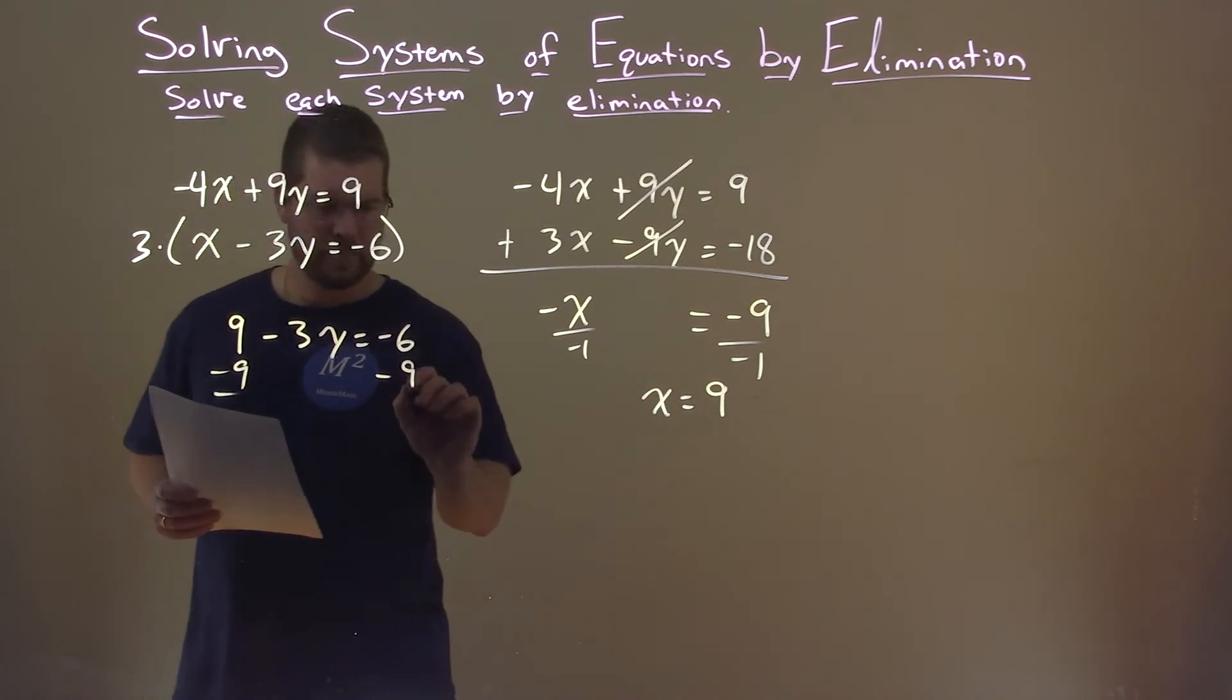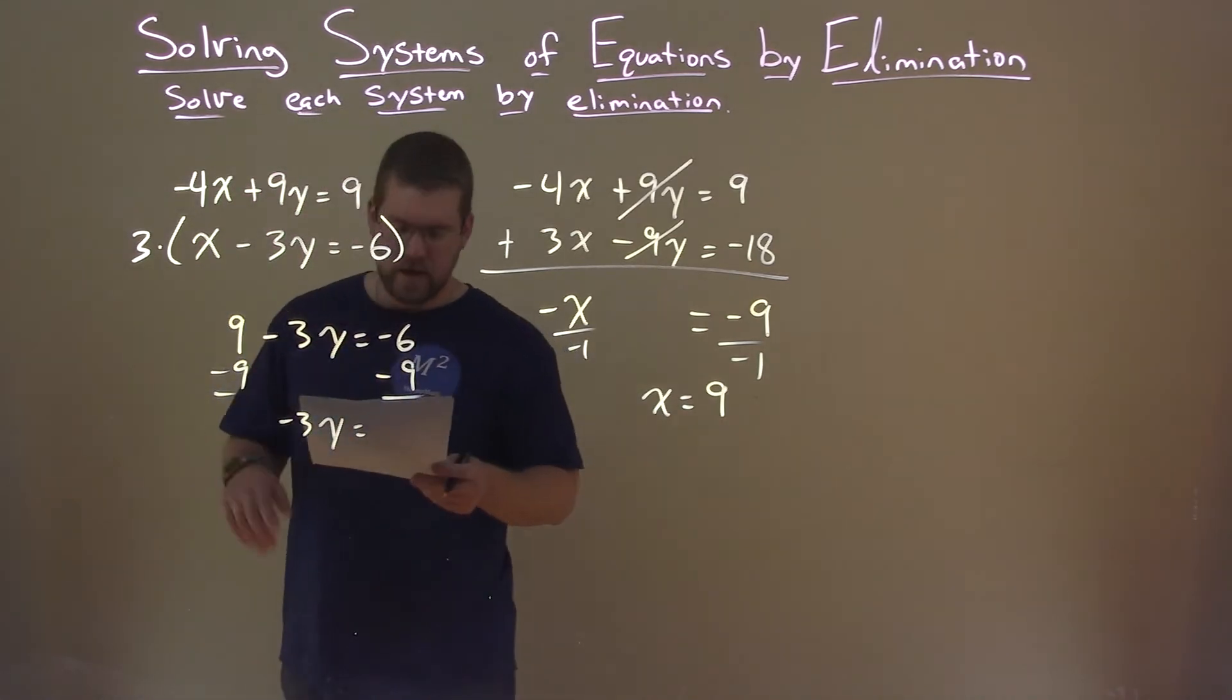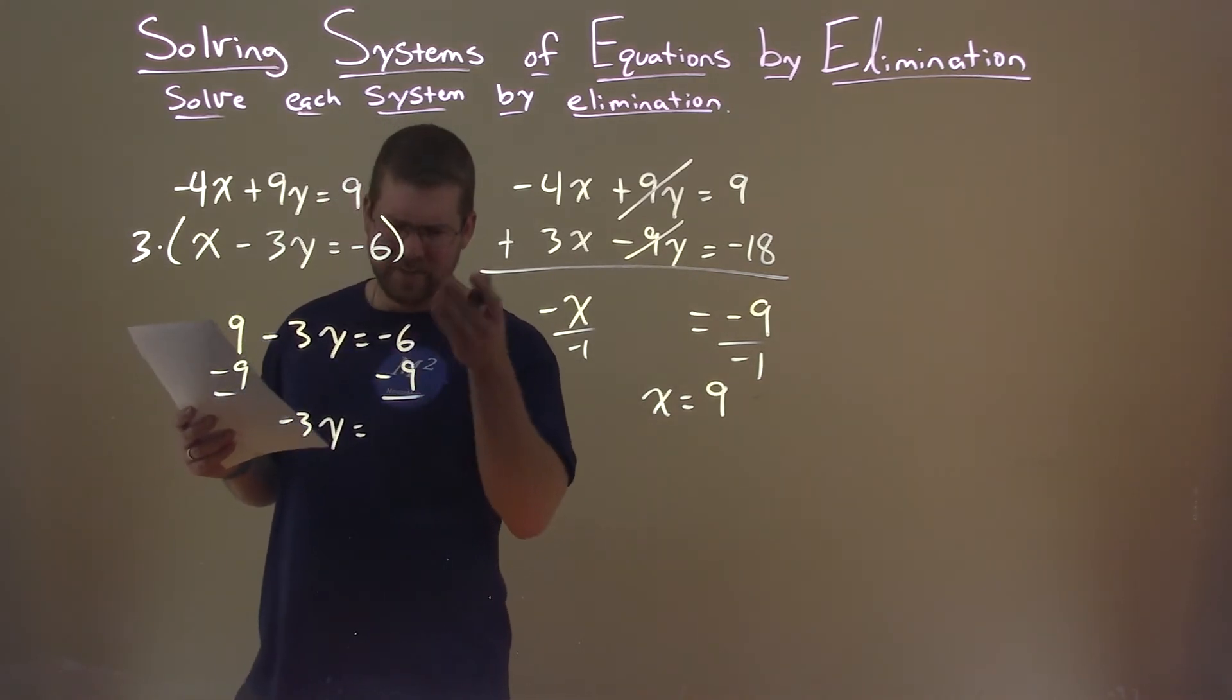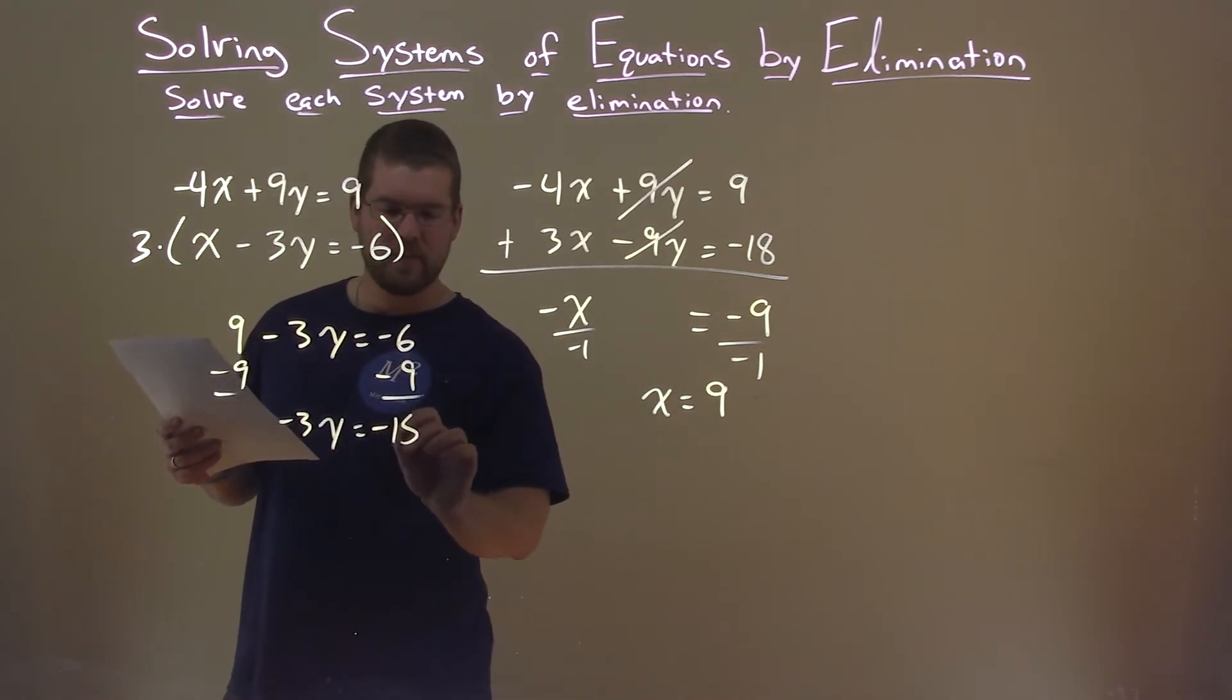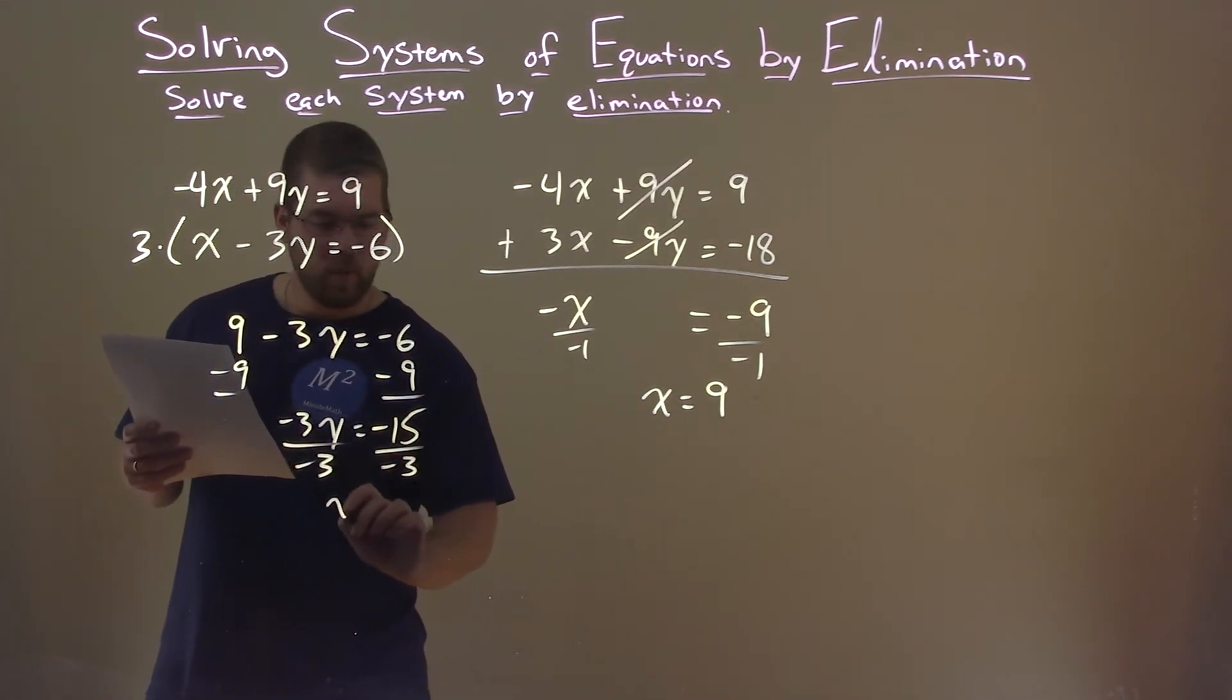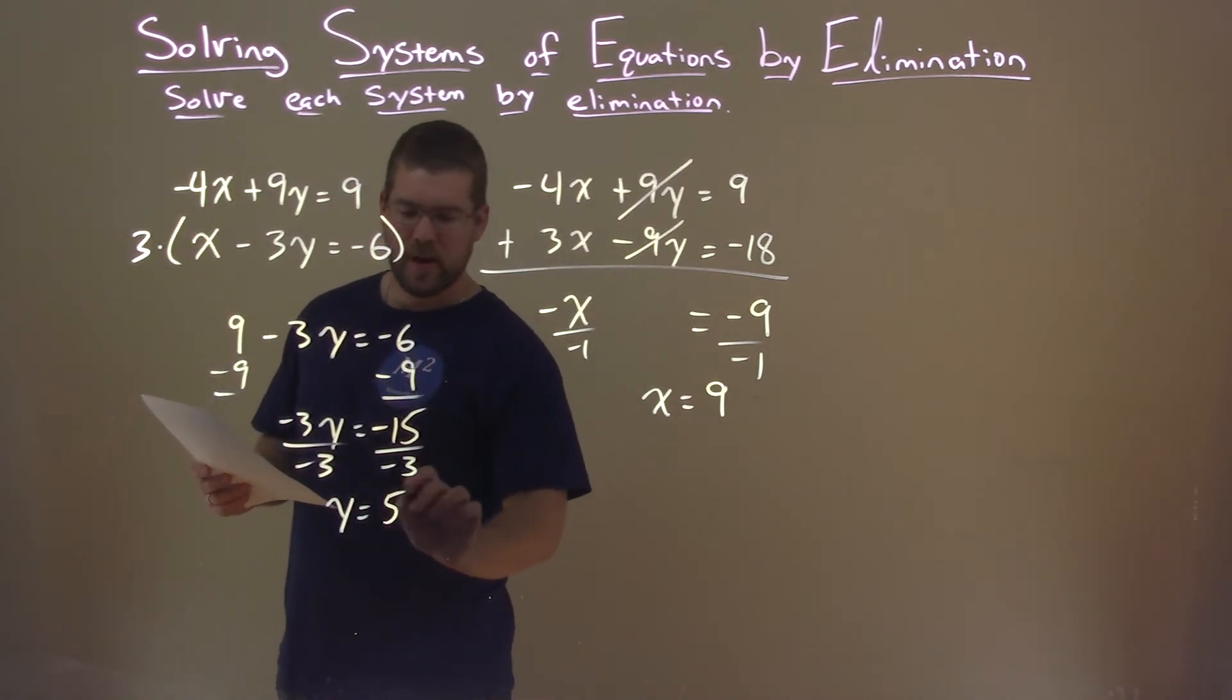Subtract 9 from both sides, and we have negative 3y equals... negative 6 minus 9, negative 15. Divide both sides by negative 3, and y is equal to negative 15 divided by negative 3, positive 5.